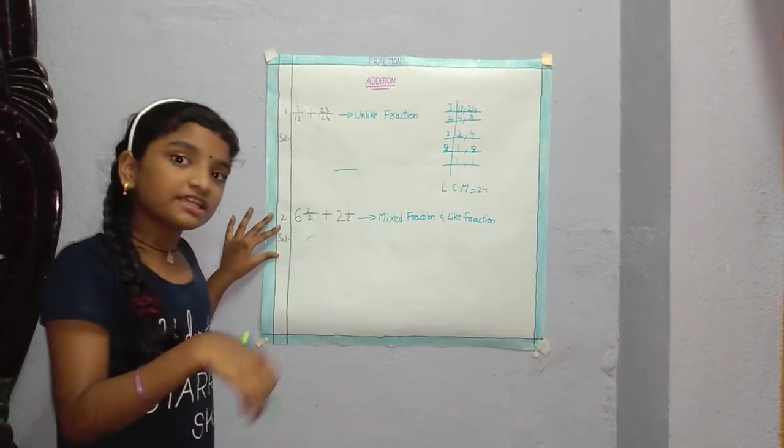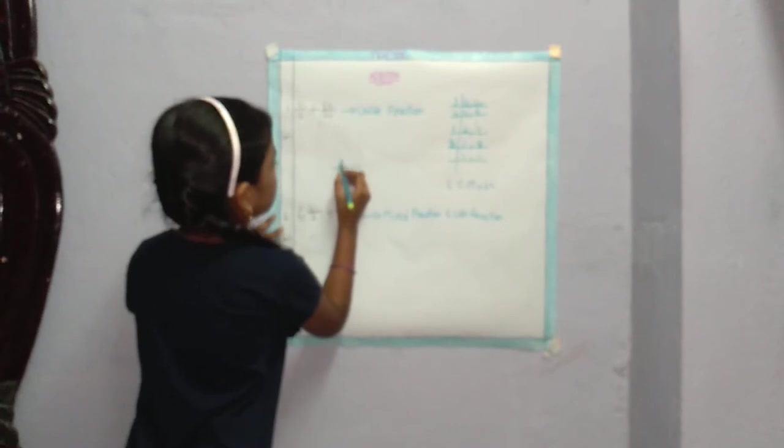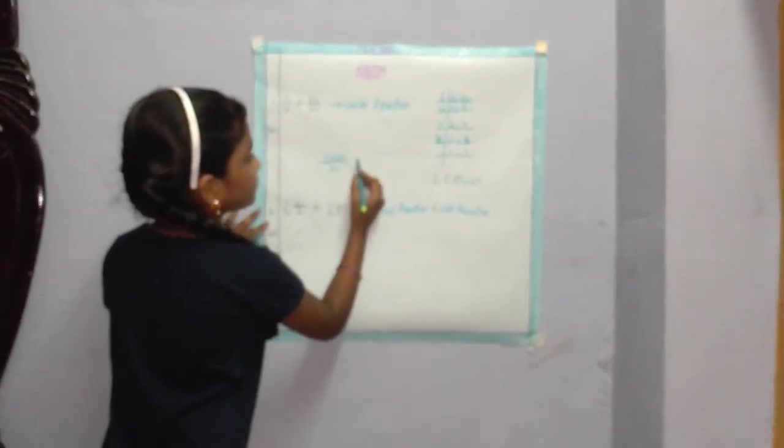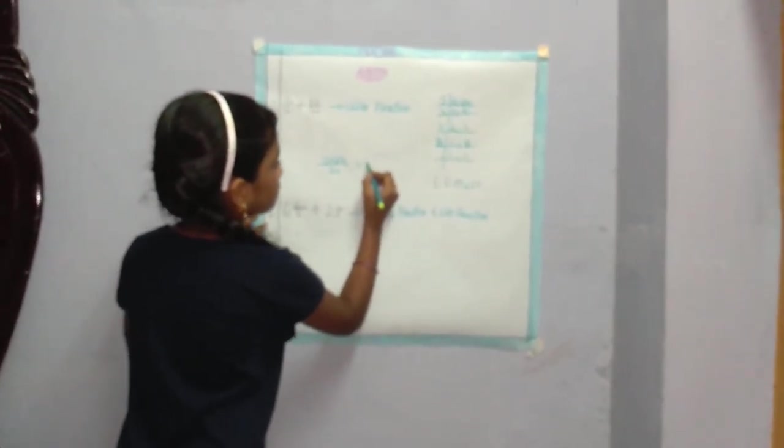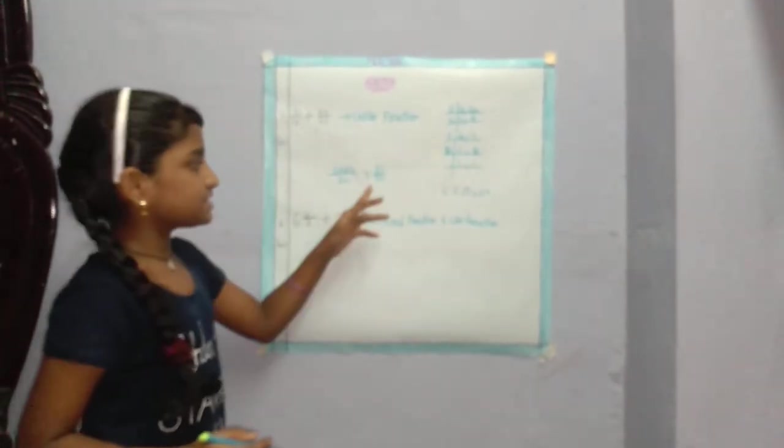Now the denominator is also 24. Now 7 plus 23 is equal to 30. 30 by 24. And this is the answer.